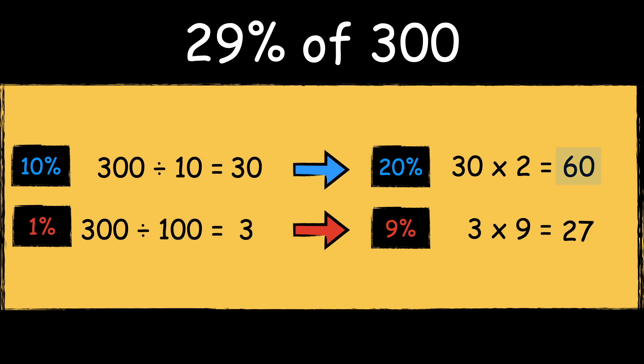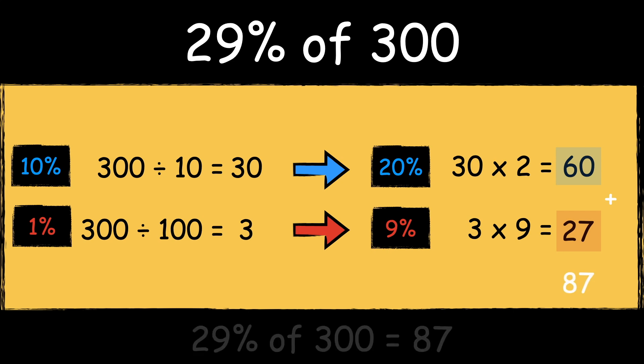Now that we have found 20% of 300 and 9% of 300, we need to add them together to find 29%. 60 add 27 is 87, so 29% of 300 is 87.